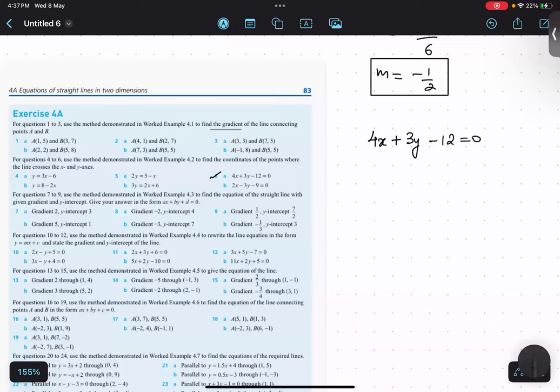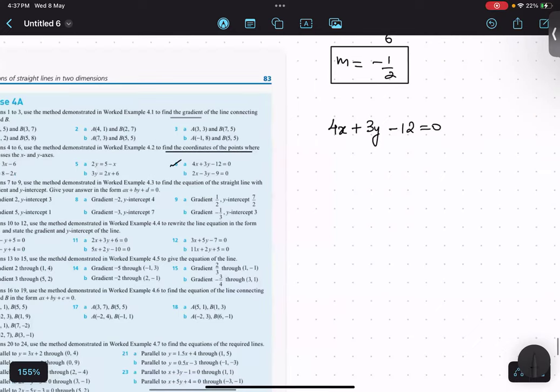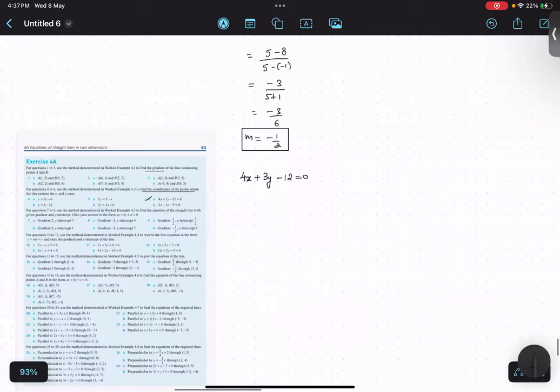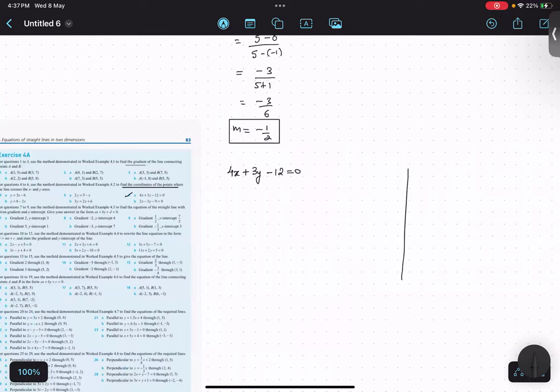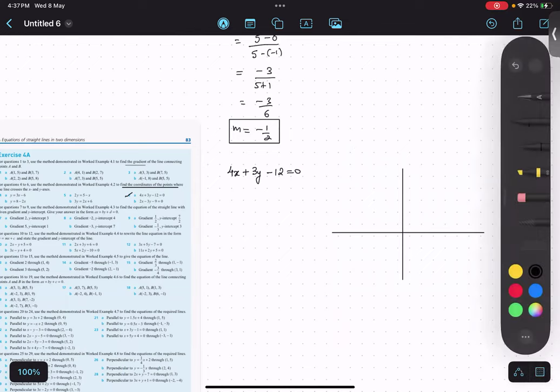So this question is find the coordinate of the point where the line crosses x-axis and y-axis. Let us try to understand first of all what does it mean. So let's say this is the coordinate axis and we have a line.